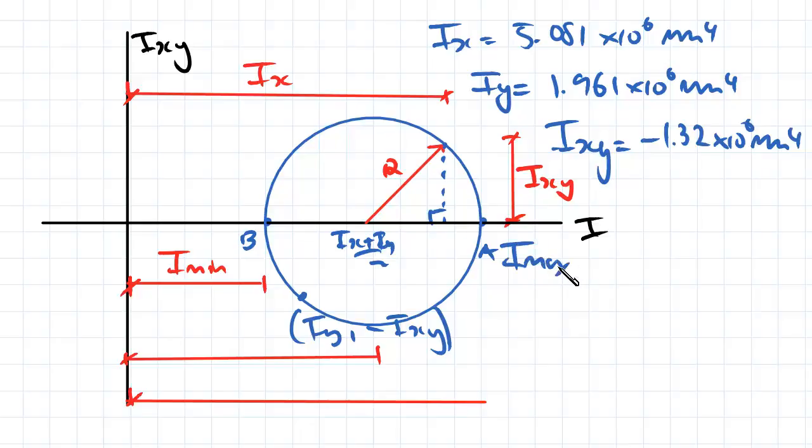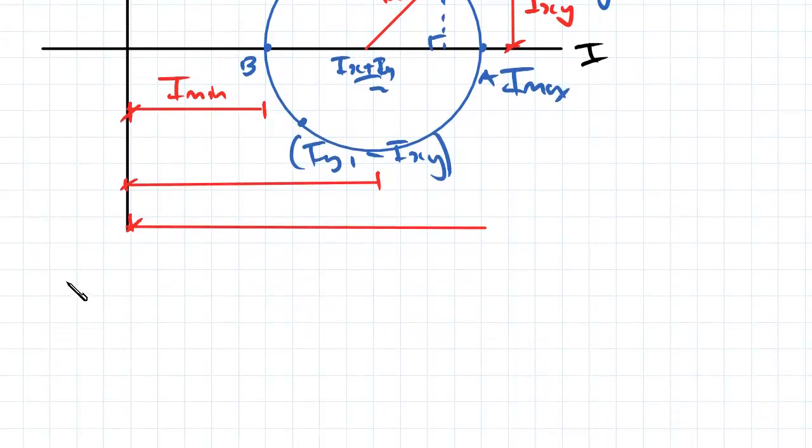First we were going to use this average point here and we're going to work off there. So that average point there is just the average of our Ix and our Iy values.